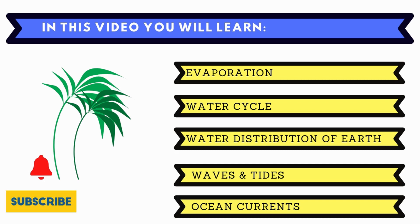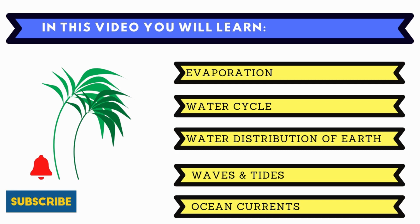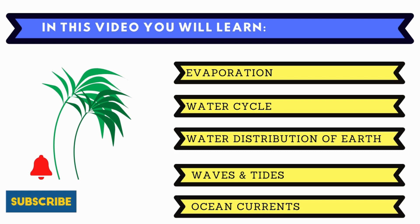Hello everyone. In this video we are going to cover the fifth unit of NCERT Geography Class 7. We are going to study about the water cycle and its movement across Earth. So let's get started.